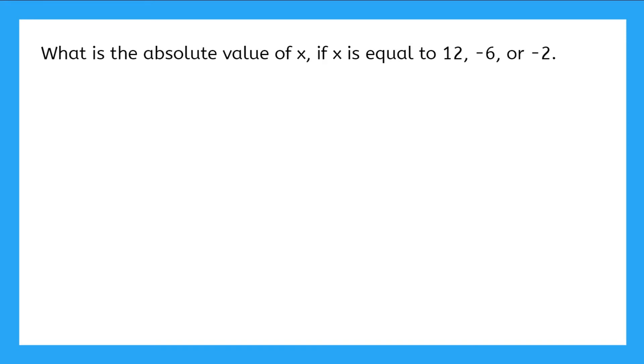Let's look at a few examples. What is the absolute value of x if x is equal to 12, negative six, or negative two? Well, first let's learn a little shorthand or the symbol for absolute value. Instead of having to write out the words absolute value of x, we can put vertical lines on either side of the number we're evaluating. Let's use this shorthand to help with our examples.